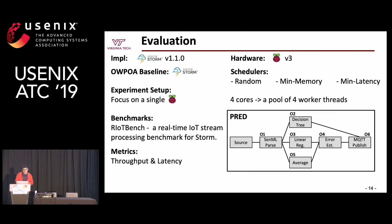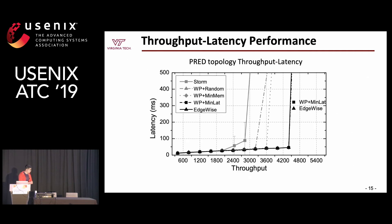Here is the throughput-latency performance result. We kept increasing the input rate to achieve higher and higher throughput and measured end-to-end latency. When the input rate and throughput are low, everyone performs well because most queues are empty. But once the system gets saturated, the scheduler makes a significant difference.